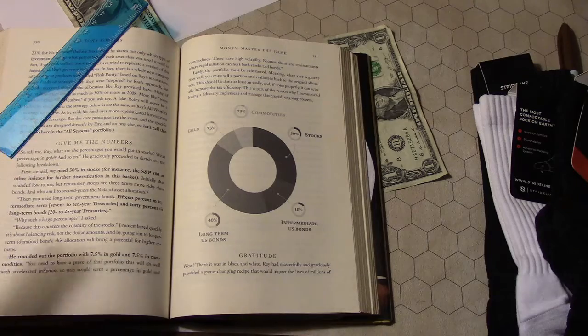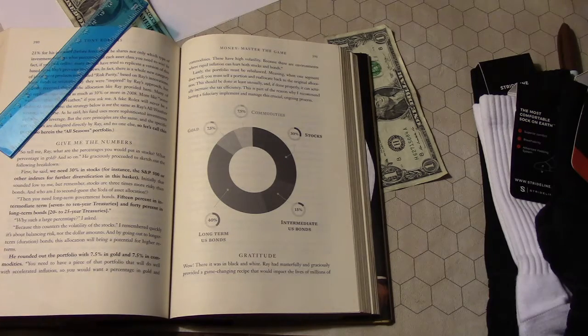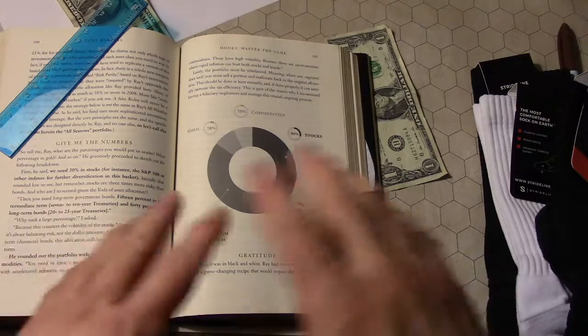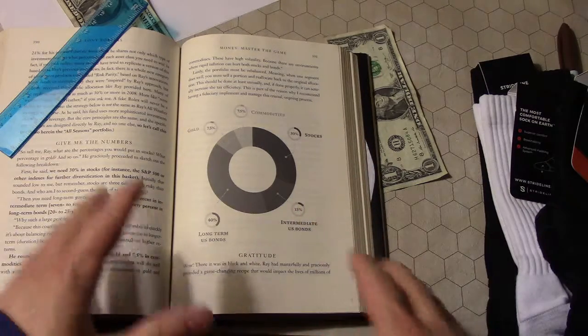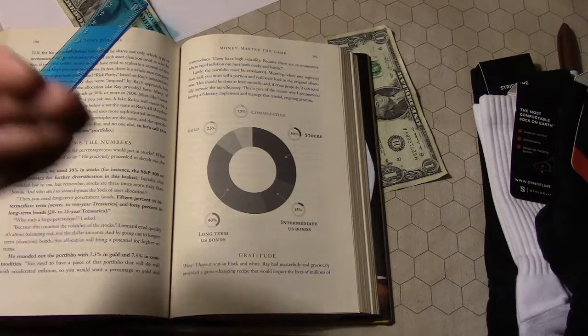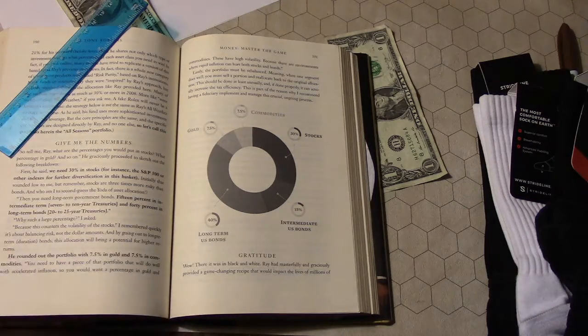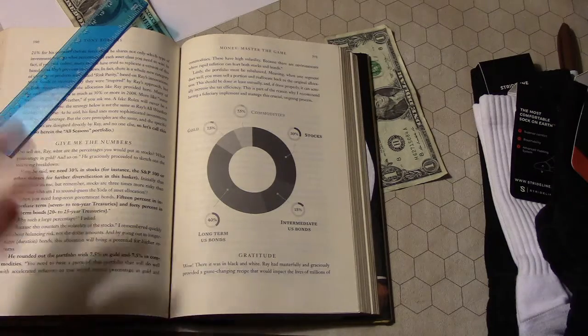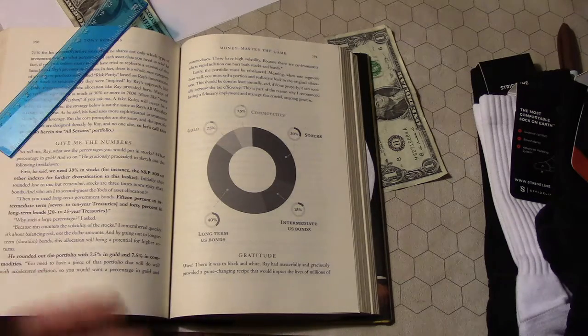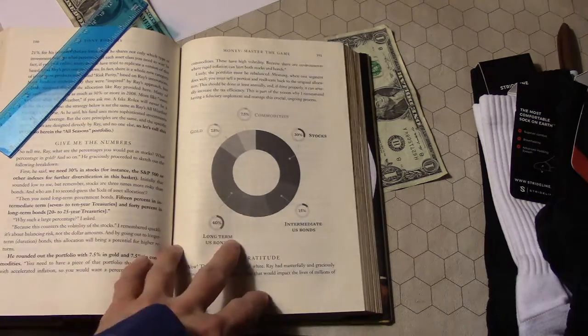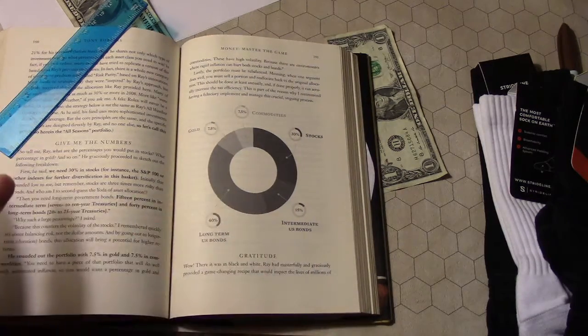This is an asset allocation that he espouses basically just off the cuff during this interview, and that's what Tony ran with. I'm not saying that this is what you should do. I'm just saying this is what's in the book and this seems to be the centerpiece of the book. In other videos I'll talk about other asset allocations by other experts that may be more in line with what you might want to do, but this is the punchline in the book. Just saved you a ton of time.